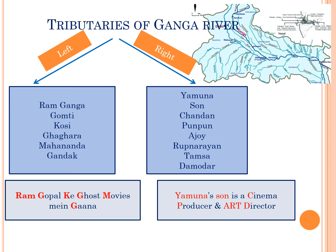The left tributaries of the Ganga river are Ramganga, Gomati, Kosi, Ghagra, Mahananda, and Gandak. To remember these left tributaries, the trick is 'Ram Gopal Varma ke Ghost Movies mein Gana', where the first letters represent the first letters of the left tributaries of Ganga.